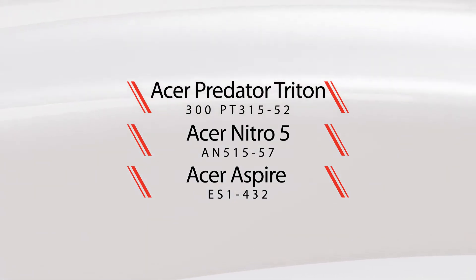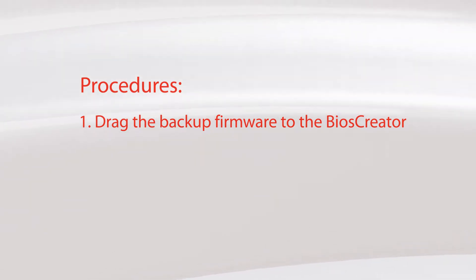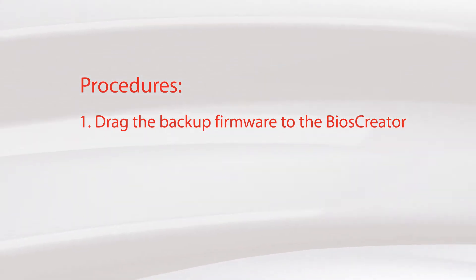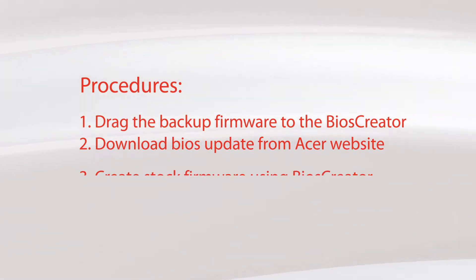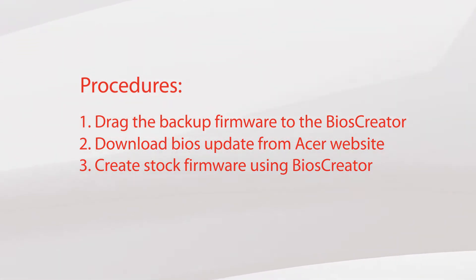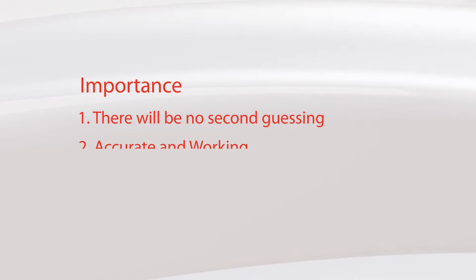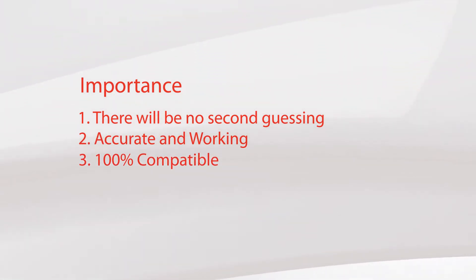To accomplish our objectives we will show you three different tasks: 1. Drag the backup firmware or dump file to BIOS Creator to get the BIOS version you need. 2. Download the BIOS update from the Acer website. 3. Build stock firmware from the downloaded BIOS update file. The importance of creating stock firmware that exactly matches the BIOS version: there will be no second guessing, it will be accurate and working, and 100% compatible.